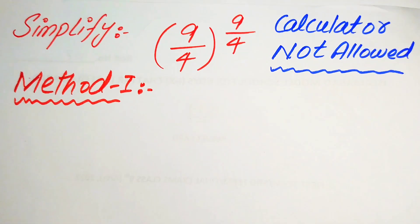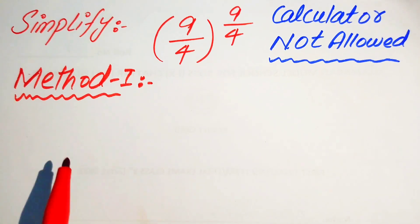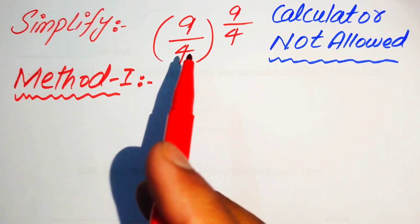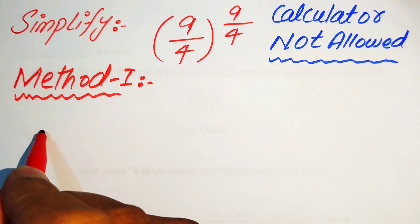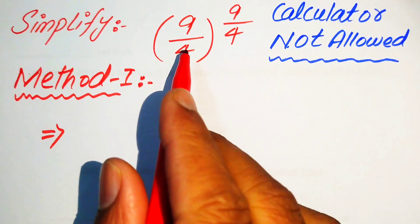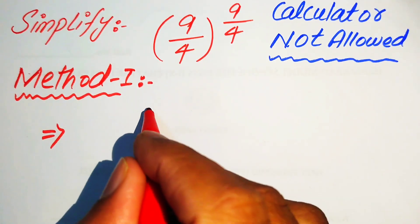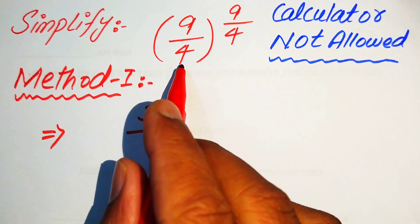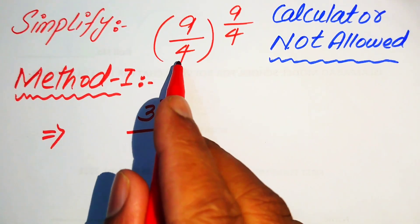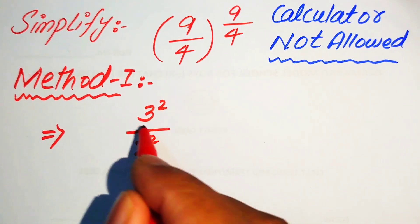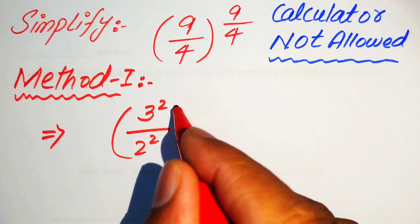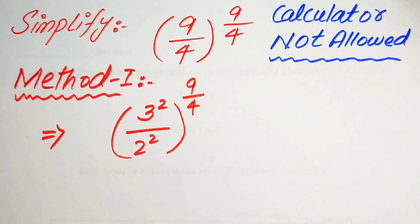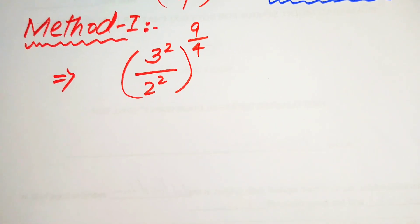In the first method, we have the base 9/4 and the exponent is also 9/4. We write the base 9 as 3 squared, and 4 as 2 squared, with the whole expression raised to the power 9/4.